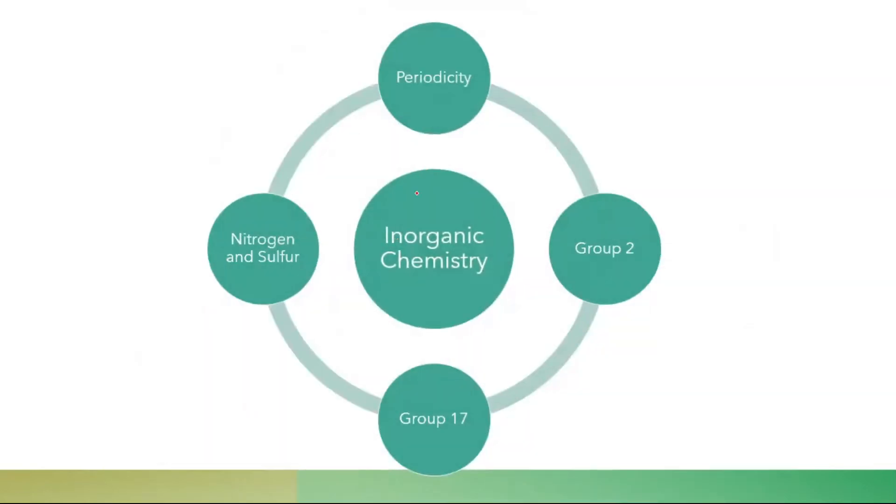After that, the Inorganic chemistry has 4 chapters and they are Periodicity, Group 2, Group 17, and Nitrogen and Sulfur.